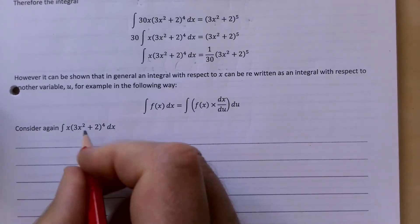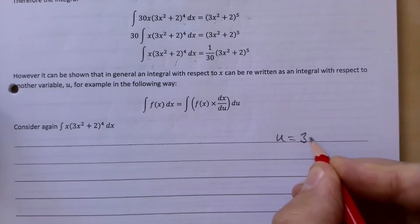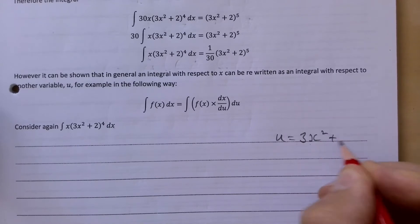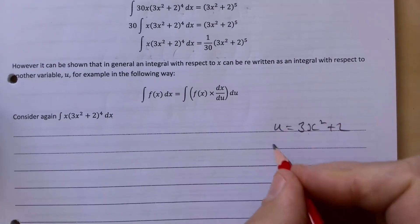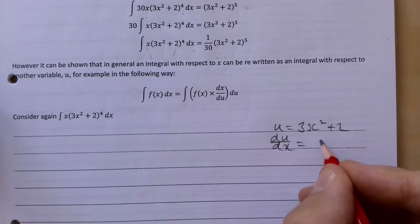We're going to let u equal to the bracket. So we have u = 3x² + 2. If you differentiate that, you get du/dx, and that of course gives us 6x.